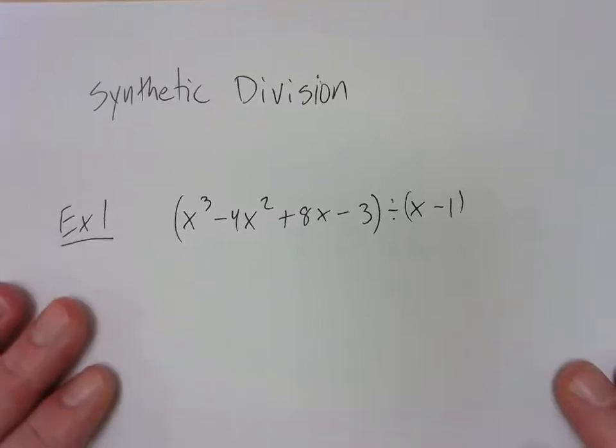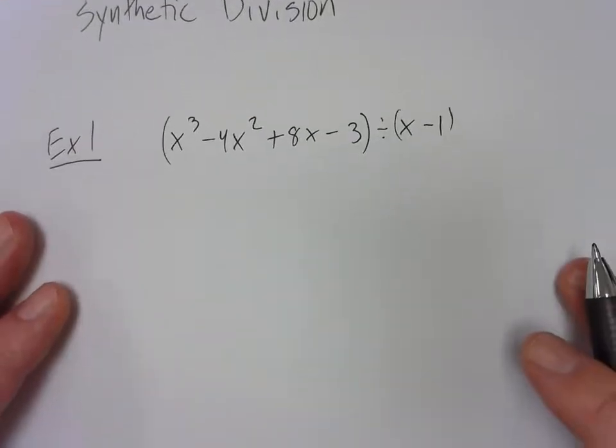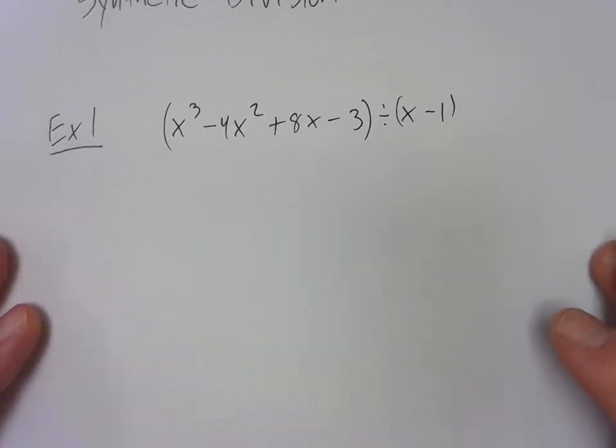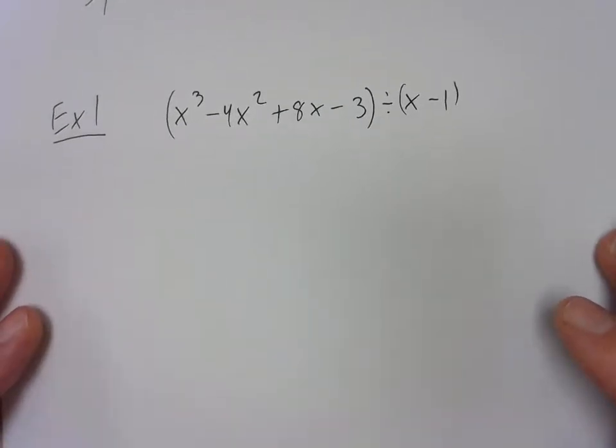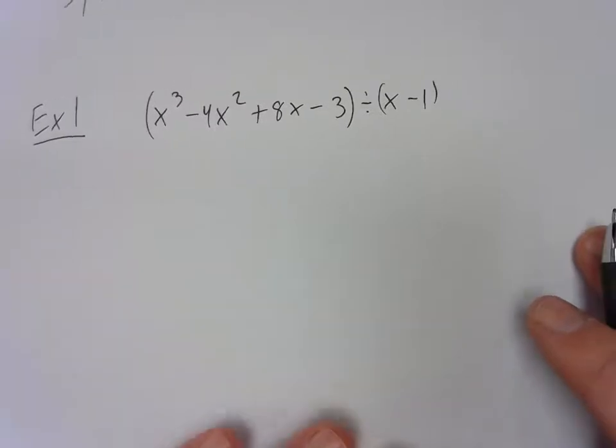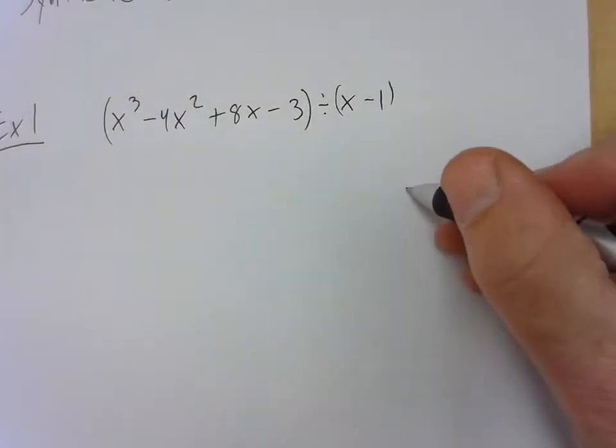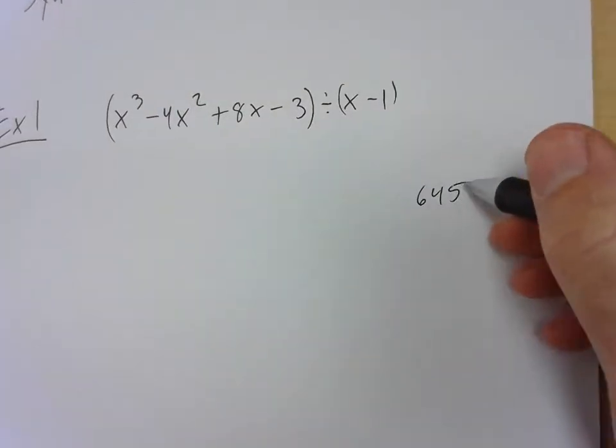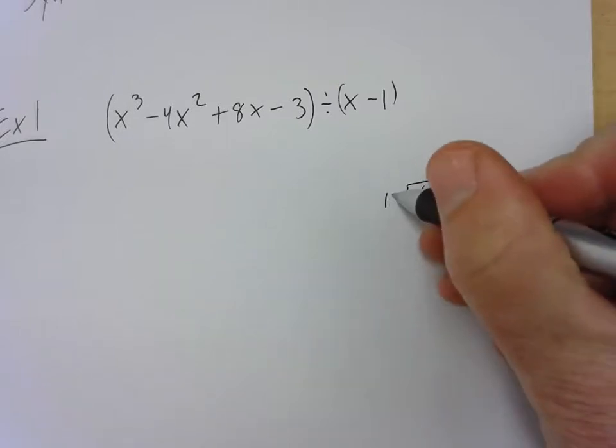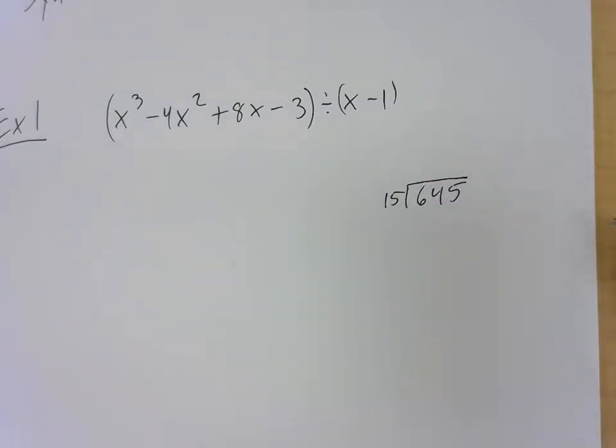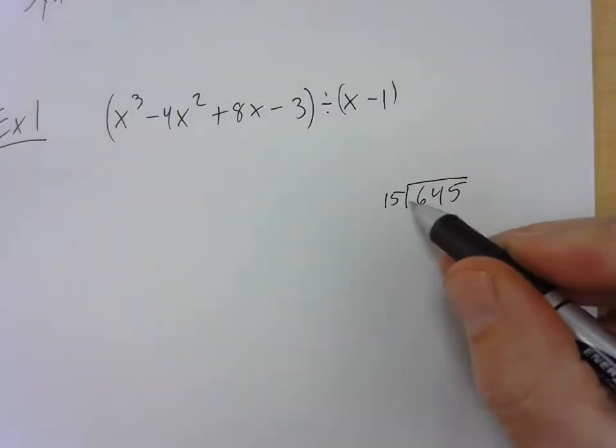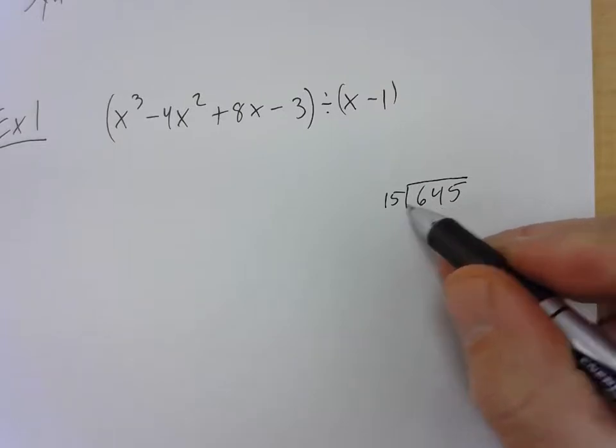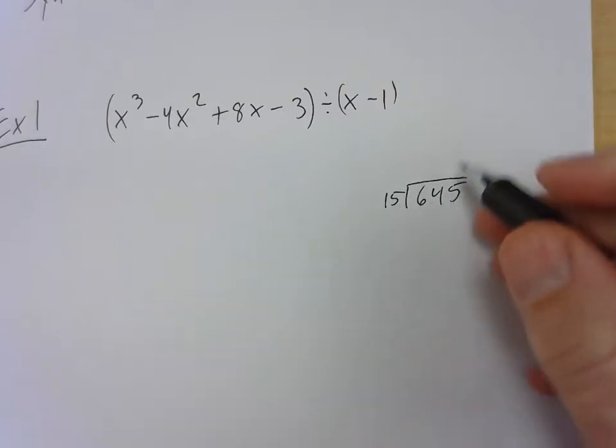Here's how we set up synthetic division. In regular long division we subtract every time. So for example if I have 645 and I'm going to divide that by 15, I subtract every time I do the problem. Does 15 go into 6? No. Does 15 go into 60? Yes.